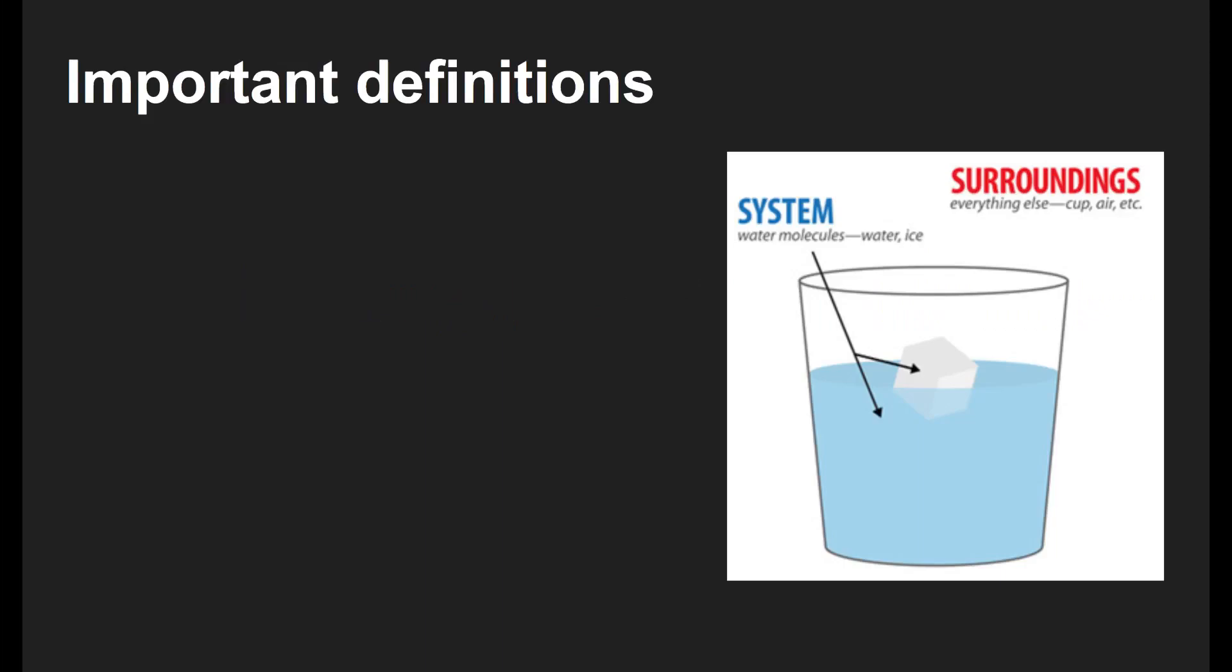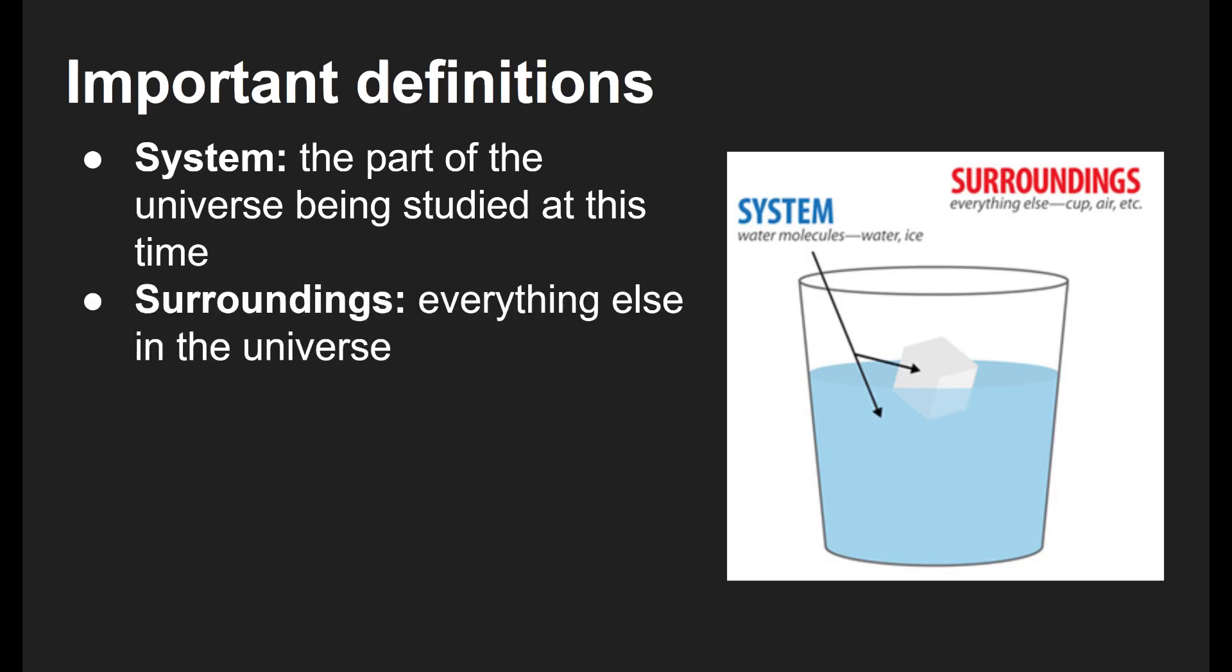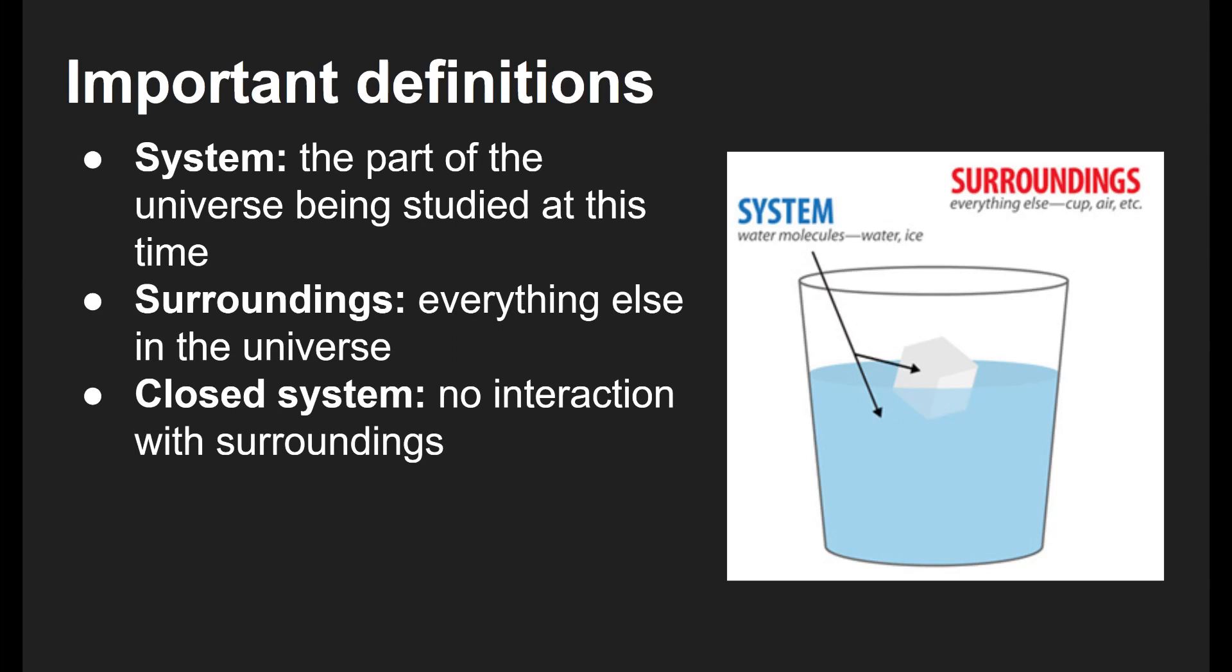And we're going to learn how to use energy bar charts. But before we talk about that, let's go back and review some of the vocab that we've already seen before. So we know that the system is the thing that we are looking at, the thing we are studying at this moment. We saw this back during the mass and change lab. Remember, we talked about open systems and closed systems. The surroundings are everything that is not the system. And of course, a closed system is when the system is sealed off from the surroundings, and an open system is when it's able to interact with the surroundings.